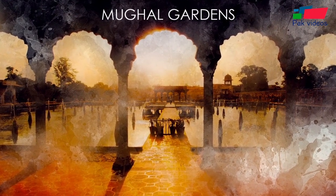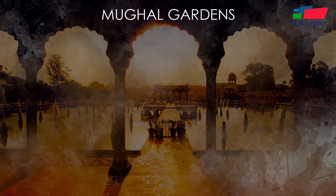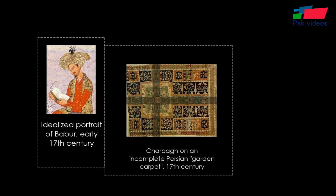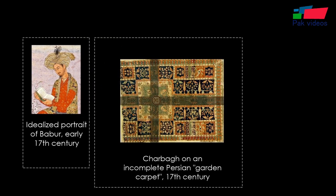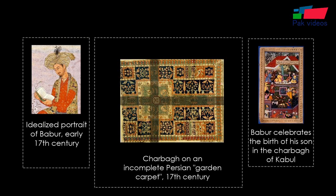The Mughal Gardens are a type of garden built by the Mughals in the Persian style of architecture. The founder of the Mughal Empire, Babar, described his favorite type of garden as a Chahar Bagh, which is a Persian and Indo-Persian quadrilateral garden layout divided by walkways or flowing water into four smaller parts.